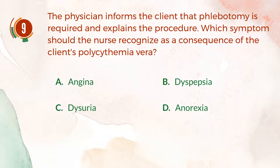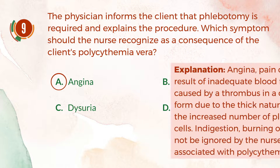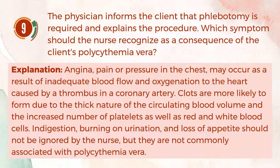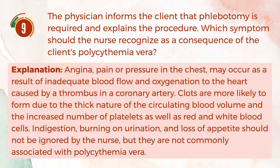The correct answer is A, angina. Explanation: Angina — pain or pressure in the chest — may occur as a result of inadequate blood flow and oxygenation to the heart caused by a thrombus in a coronary artery. Clots are more likely to form due to the thick nature of the circulating blood volume and the increased number of platelets as well as red and white blood cells. Indigestion, burning on urination, and loss of appetite should not be ignored by the nurse, but they are not commonly associated with polycythemia vera.